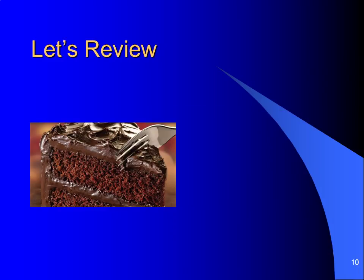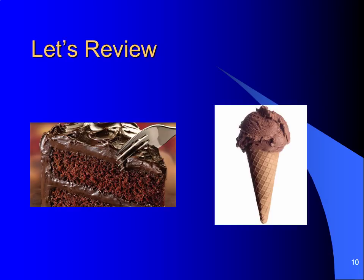How about this argument? I love chocolate cake. Therefore, I'll love chocolate ice cream. The sample is chocolate cake and the target is chocolate ice cream. I have to ask myself: what's the relationship between the sample and the target? Is the sample a subset of the target, or is the sample a distinct thing from the target? Is chocolate cake a subset of chocolate ice cream, or is chocolate cake a distinct thing from chocolate ice cream? In this case, the two items are distinct, so my analogues, or terms of the comparison, are separate items. This is an analogical argument.